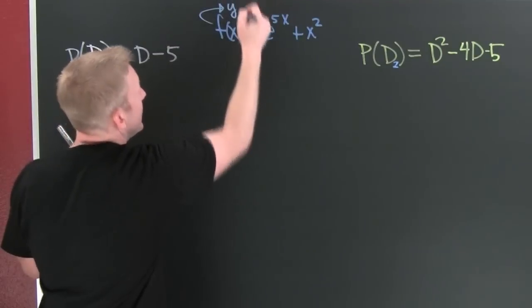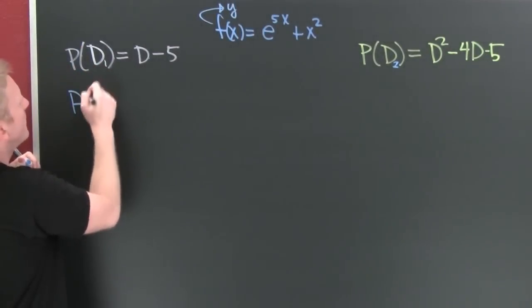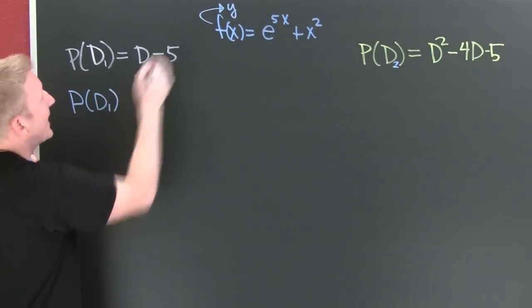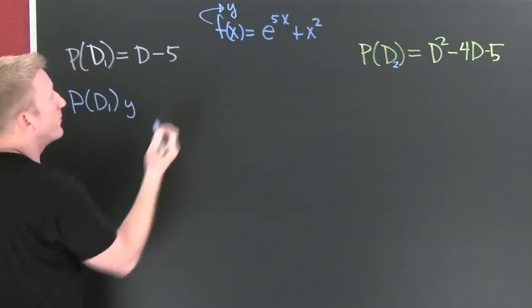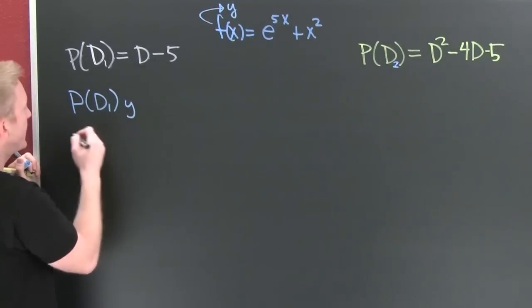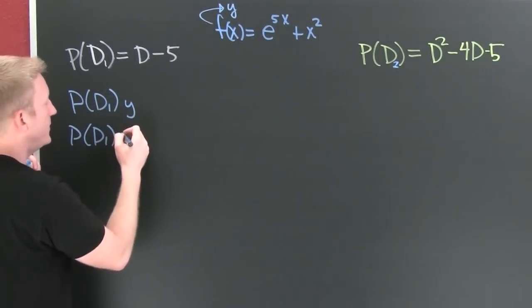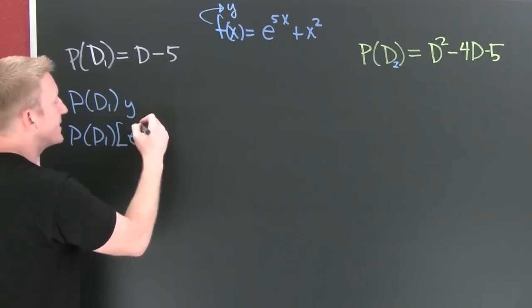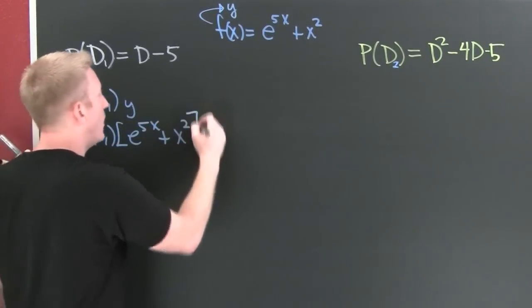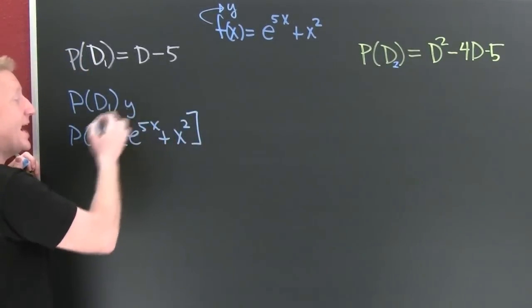This is the function, formally known as Y. So if I'm looking at PD1 acting on Y, what I'm really looking at is PD1 acting on e to the 5x plus x squared.